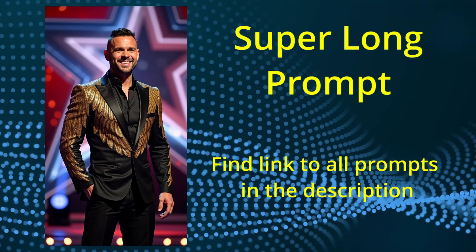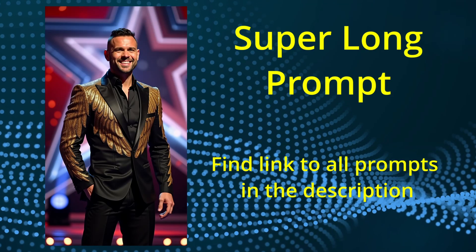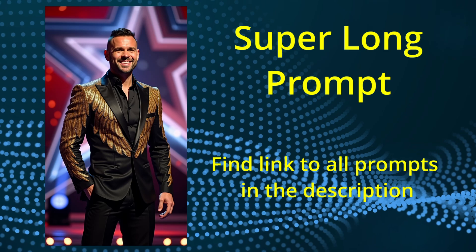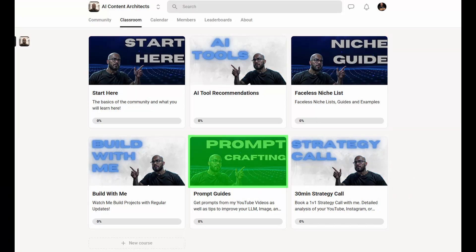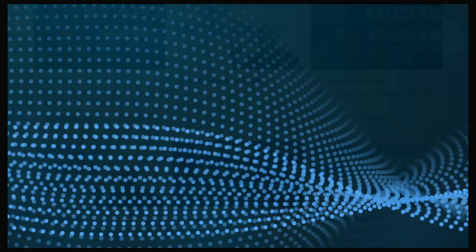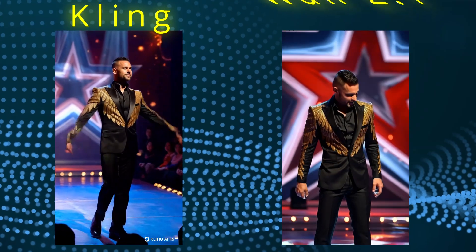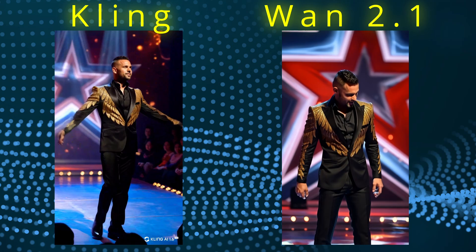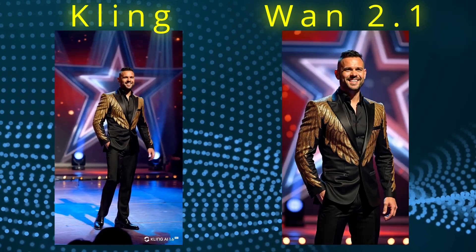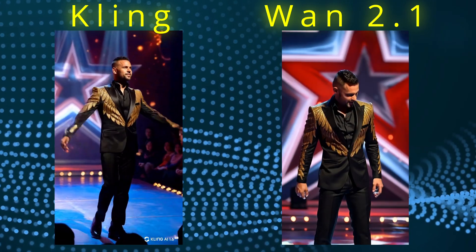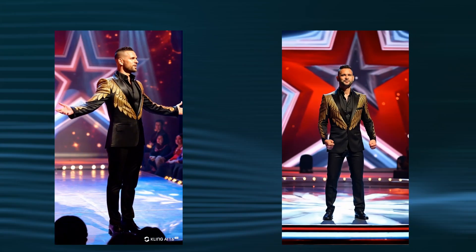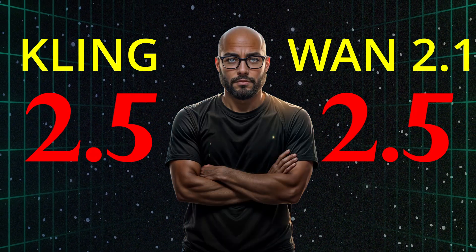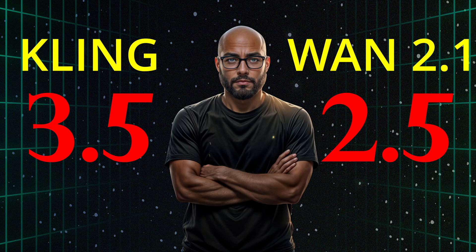The next image is of a performer — I used this for an AGT transformation video a while ago. The prompt is very detailed, so I'll leave a link to it and all the other prompts used in this video in my AI community. The big difference I see between the two generations is that the WAN generator has a little distortion when the performer ducks his head and again when his hands come together. Kling seems to handle the motion much better. This round goes to Kling, even though the WAN generation would be usable in a lot of situations.